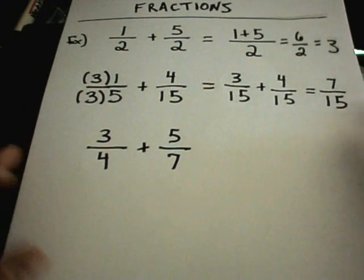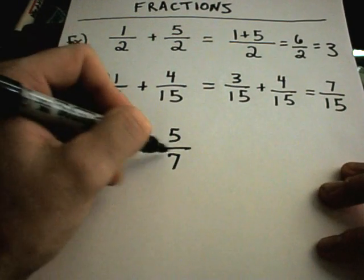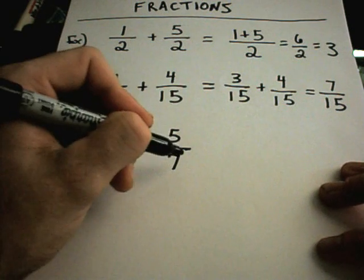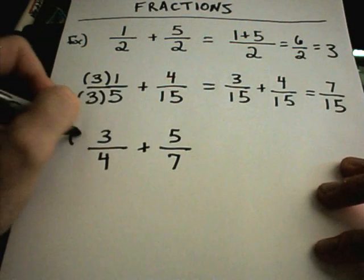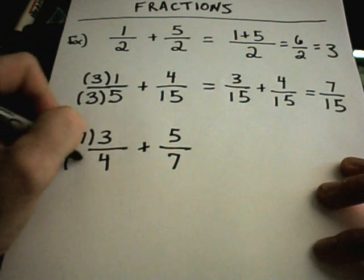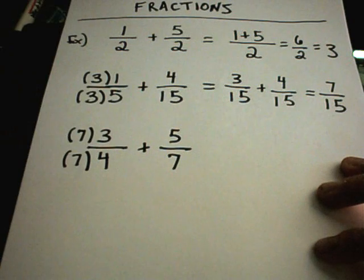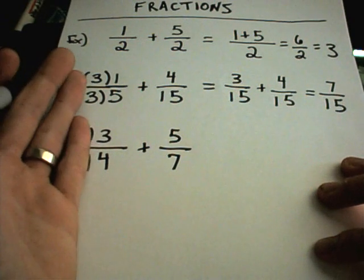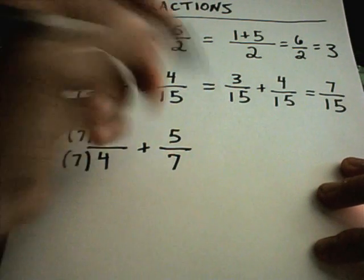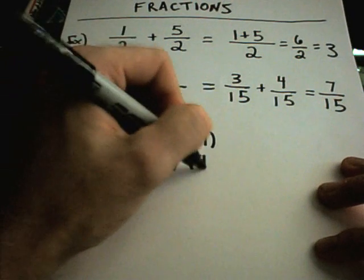One way to do these problems without thinking about it is if you look at the other denominator, in this case 7, you can multiply top and bottom of that fraction by that number. Likewise, if I look at the original, there's a 4 in the denominator, I'll multiply top and bottom by 4.